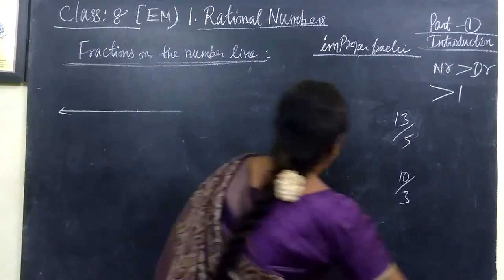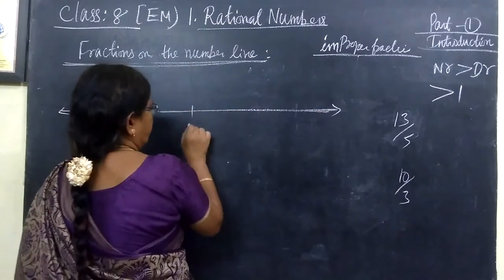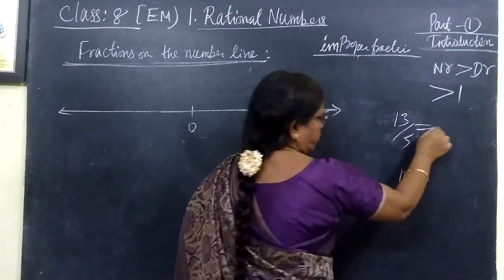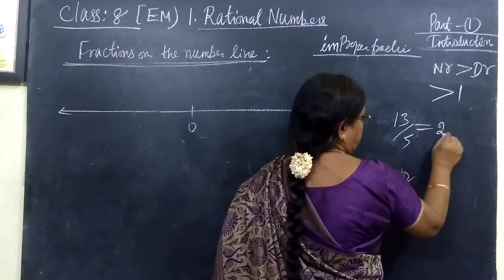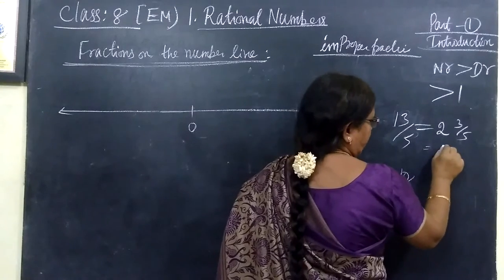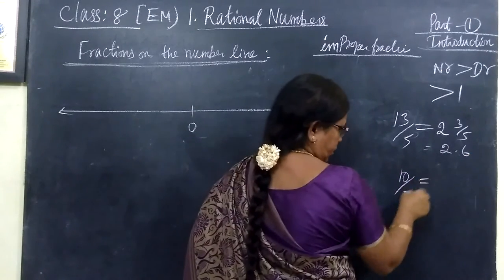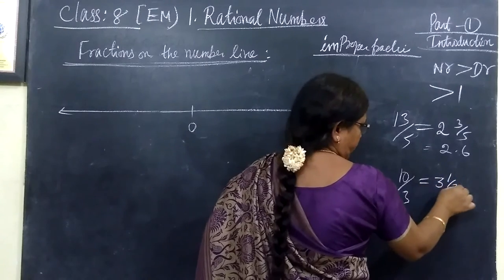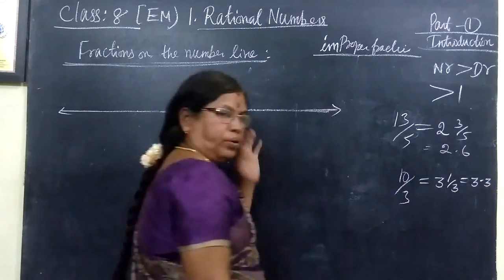So you take the number line between zero. First of all we should convert it into mixed number. Clear. 13 by 5 is 2 times then 3 by 5. 2.6. 10 by 3 is 3 and 1 by 3. So 3.33 like that you are getting.